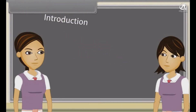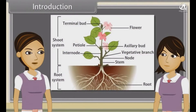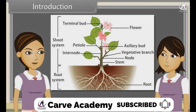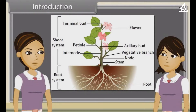When we observe a plant, we see that every plant has roots, stem and leaves. Plants also have flowers and fruits. We have already discussed characteristics, types, modifications and functions of roots. Now we will study stem.